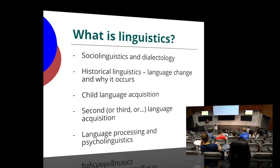There's also language acquisition — either for children or for second or third language acquisition as adults — language processing and psycholinguistics. Linguistics is so broad because language touches on so many different parts of our lives. There's so many different things that go into language; it's a very complex system, and then there's so many things that we do with language. All of those can fall within linguistics, so when we say what does a linguist do, it can be any of these things and even more. It's a very broad field.